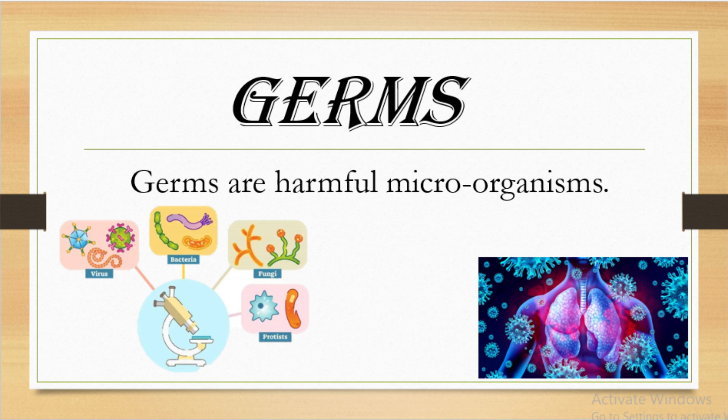Microorganisms are tiny living things which we cannot see with our naked eye. We need a microscope to see them. These microorganisms are present all around us — in air, in water, even inside our body. The harmful microorganisms are called germs.